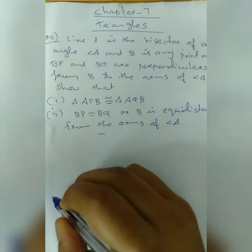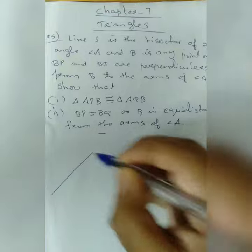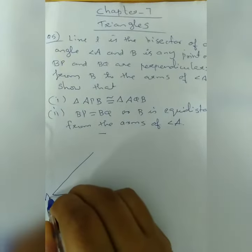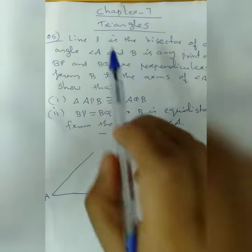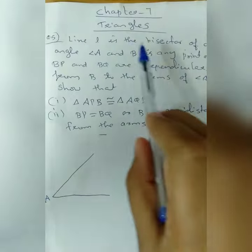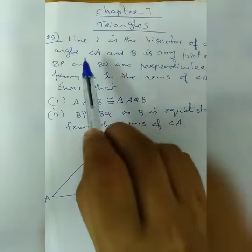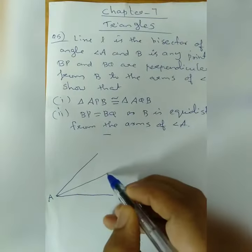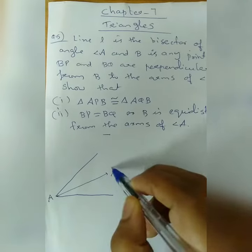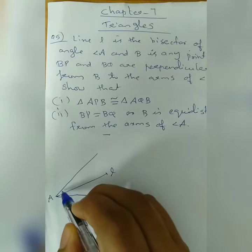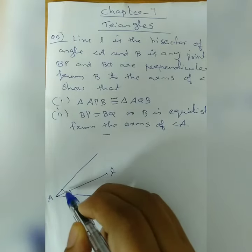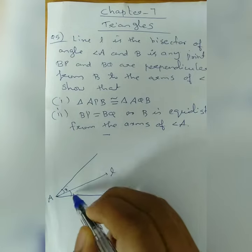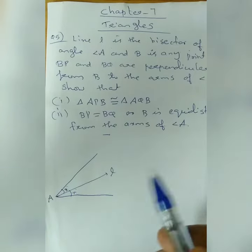First, we draw angle A. L is the bisector of angle A, which implies these two angles are equal. This angle is X degrees, which means the other angle is also X degrees.